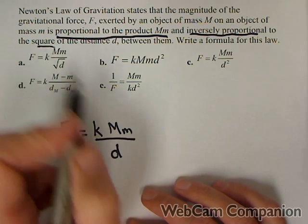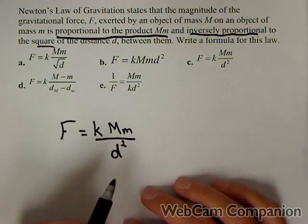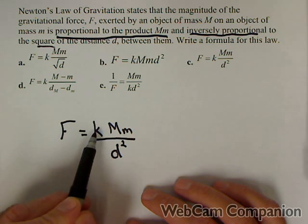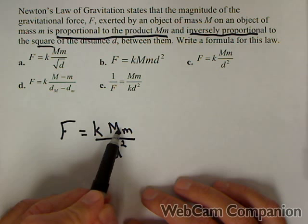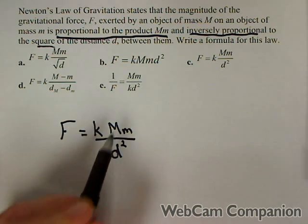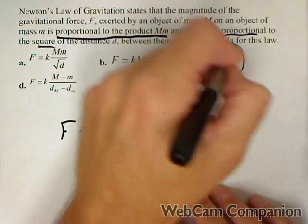And the other thing we need to pay attention to is the square of the distance, so it's d squared. So this is the combination of the two. You only need one constant of proportionality for both. It's proportional to the product of M times m and inversely proportional to the square of d.